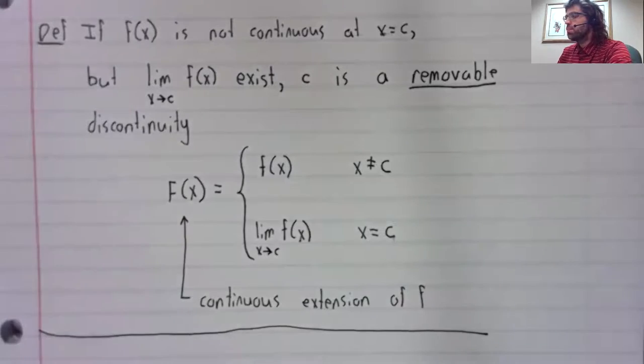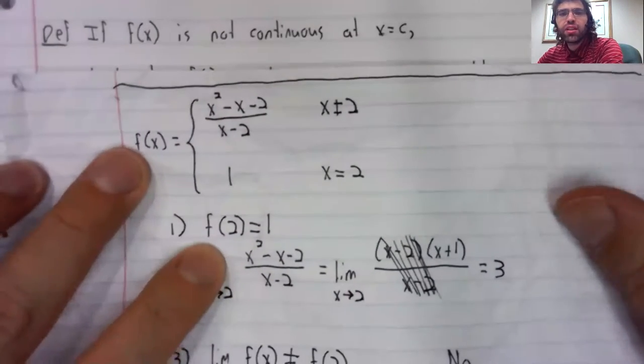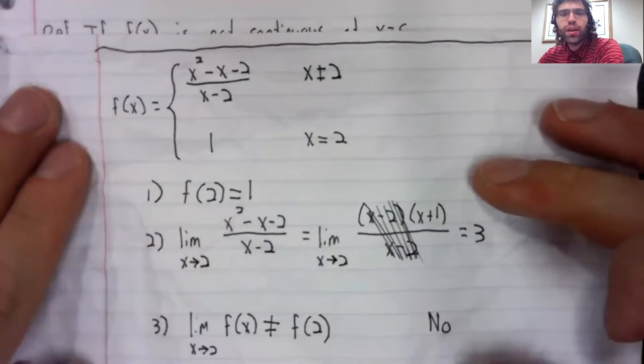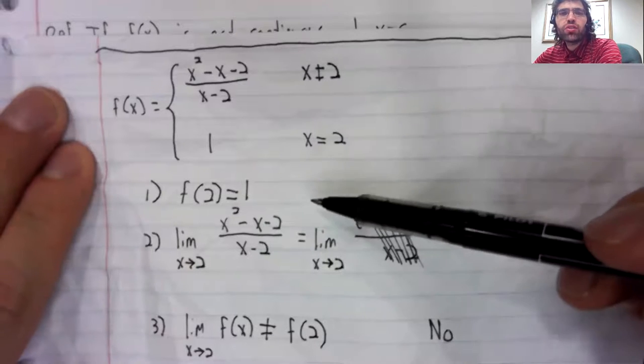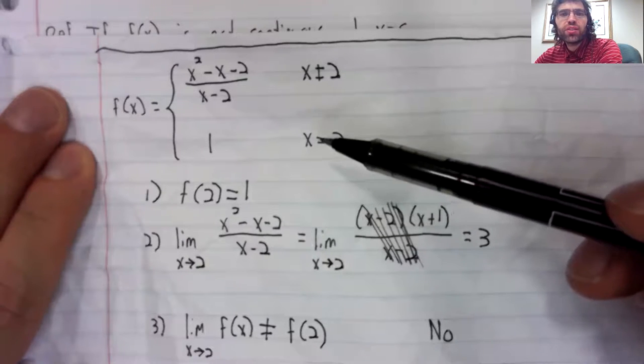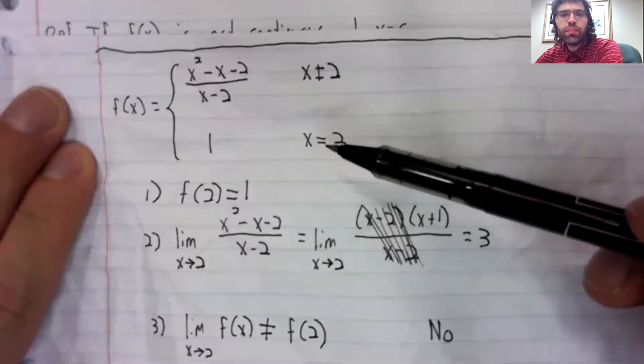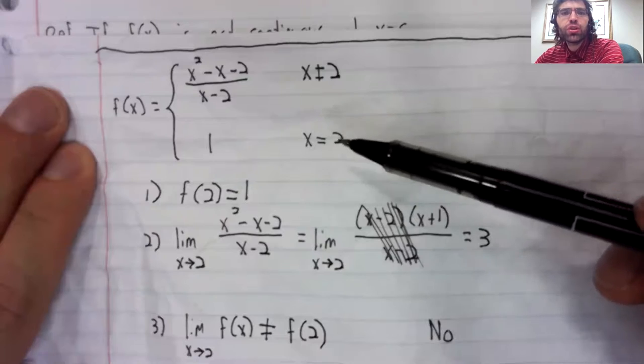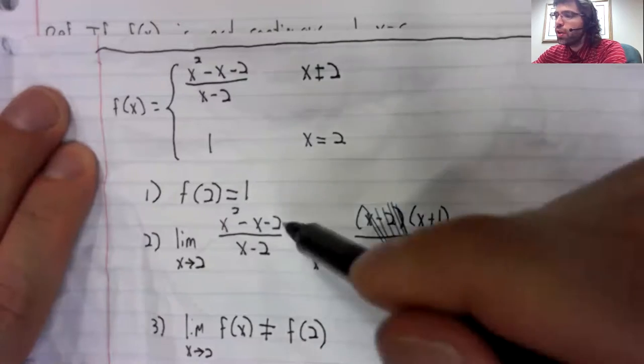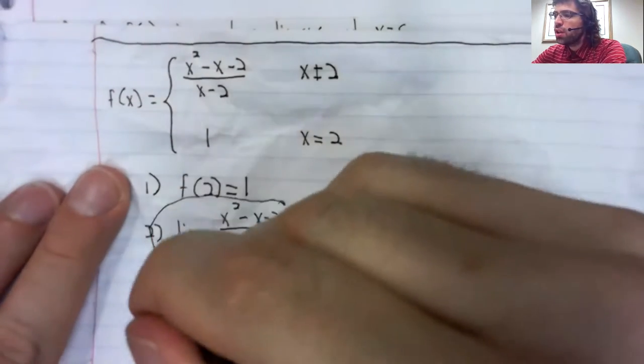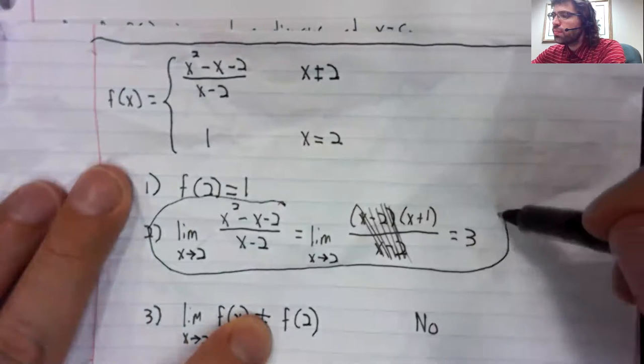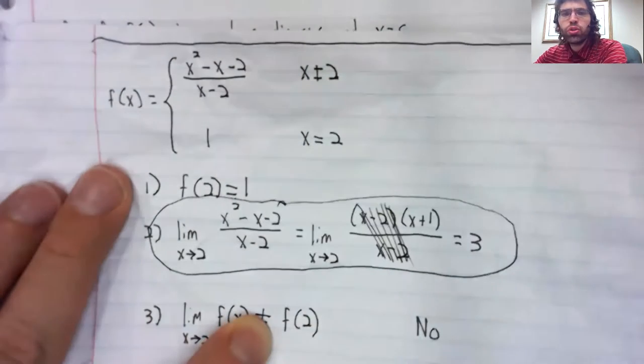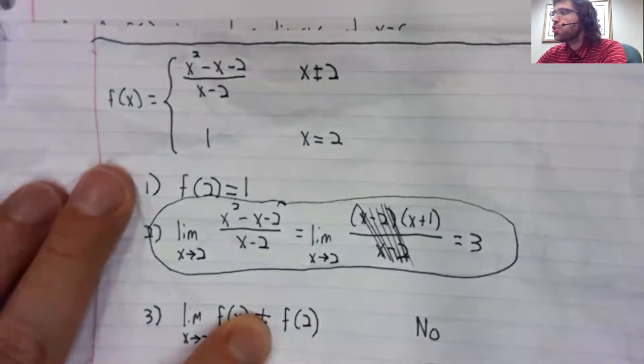Going back to this example, this function was not continuous at two, but the limit as x approaches two does exist. It equals three.